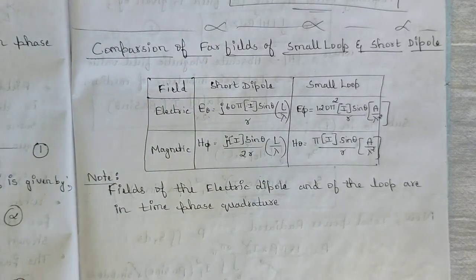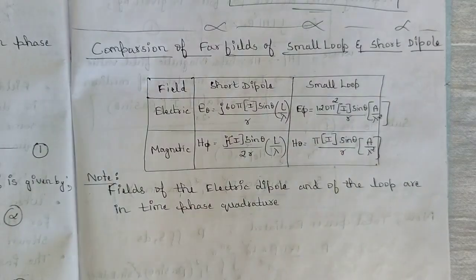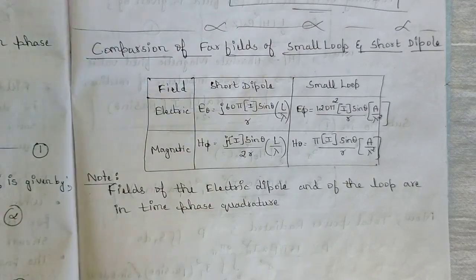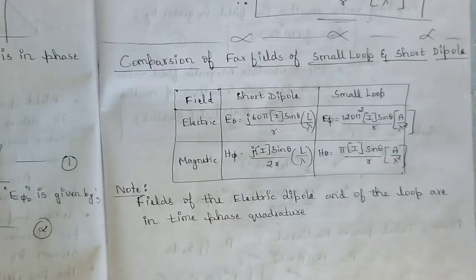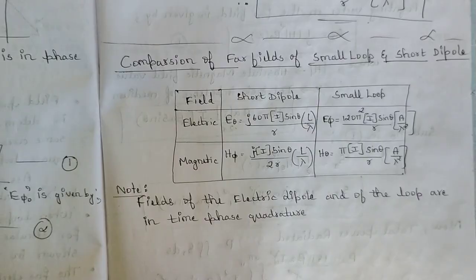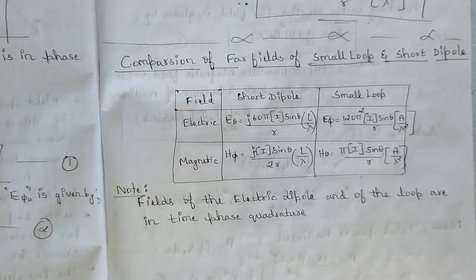That's all for this video. I hope you understood this introduction to module 5's first concept: small loop antenna. In the next video we will see the radiation resistance of this small loop antenna — there is one derivation I am going to explain, so please listen carefully. Like this video, subscribe to our channel, and keep supporting. Thank you.